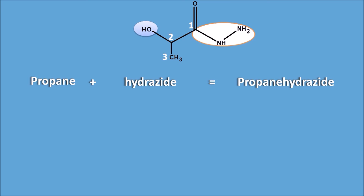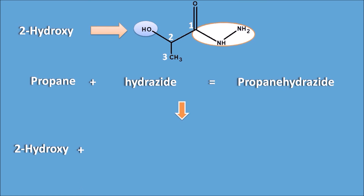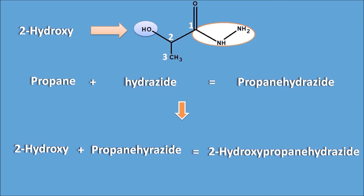Note that for certain suffixes such as 'dioic acid' and 'hydrazide', the terminal 'e' of the base name is retained for convenience rather than dropped. So the root name is propanehydrazide. The hydroxyl group is present at the second position, giving the prefix '2-hydroxy'. The complete name of this compound is 2-hydroxypropanehydrazide.